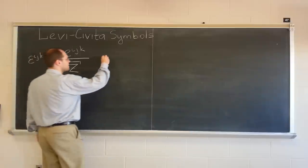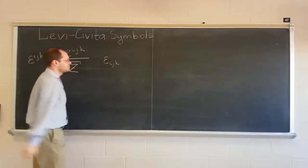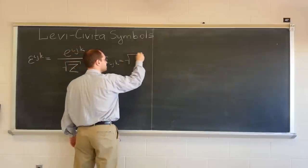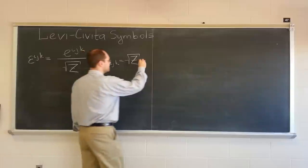And similarly, the Levi-Civita symbol with lower indices is defined as, well, now we'll have to multiply by the square root of Z, the permutation symbol.